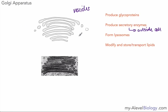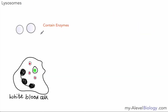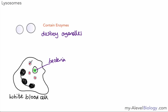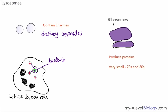Lysosomes are structures that contain enzymes and are very likely produced by the Golgi apparatus. Their job is to destroy old and worn-out organelles, and sometimes to destroy the whole cell if it's damaged or not functioning properly. One example of lysosomes in action: when white blood cells engulf bacteria, lysosomes empty their enzyme contents into the vesicle containing the bacteria, breaking them down and destroying them.